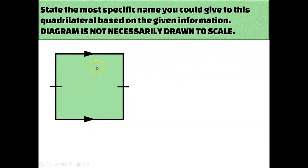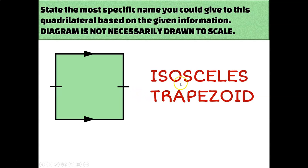For our next diagram, we have one pair of parallel sides and the other pair of sides are congruent to each other. One pair of parallel sides means it's a trapezoid, and having the other pair of sides congruent means it has to be an isosceles trapezoid. These diagrams are not drawn to scale — the point is to figure out, based on the given information, what kind of shape it is. So based on the given information, it is an isosceles trapezoid.